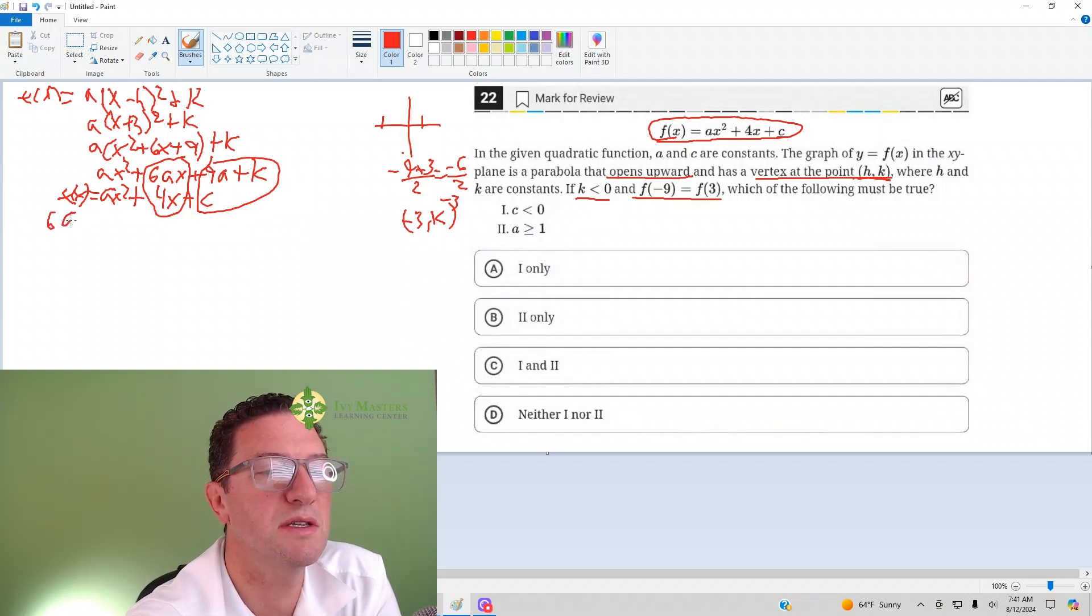From 6ax = 4x, if you divide out the x's and reduce, you find that a = 2/3.